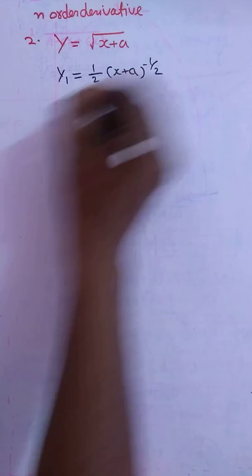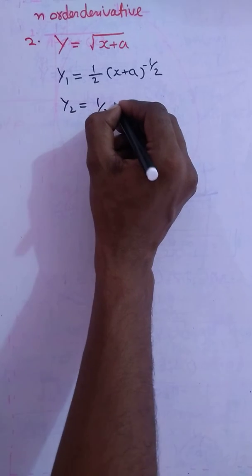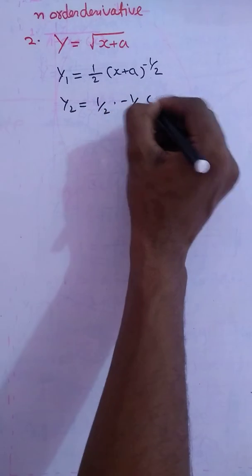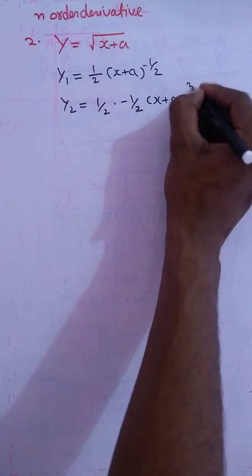And y2 will be 1 by 2 into minus 1 by 2, (x plus a) to the power minus 1 by 2 minus 1, which will be minus 3 by 2.